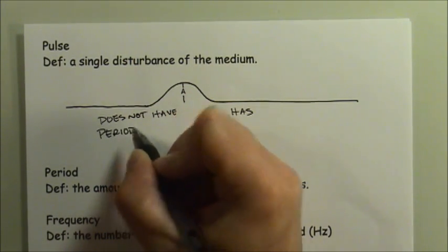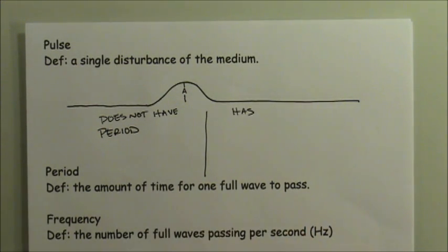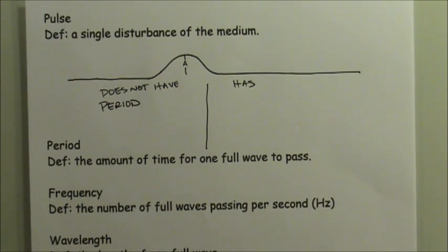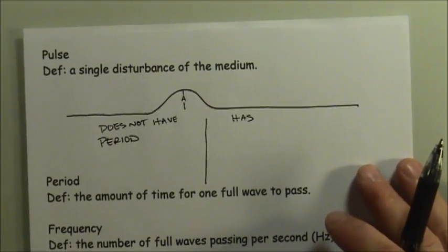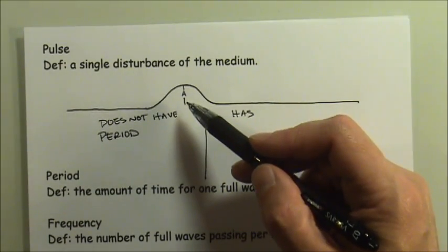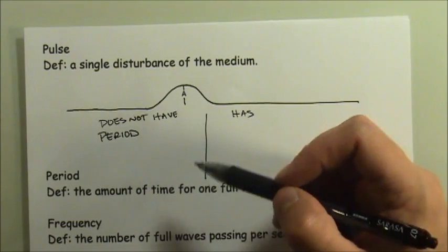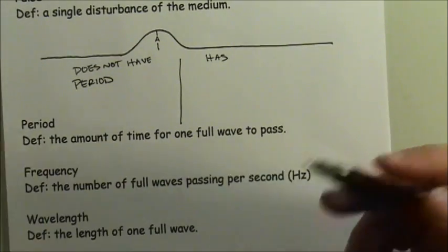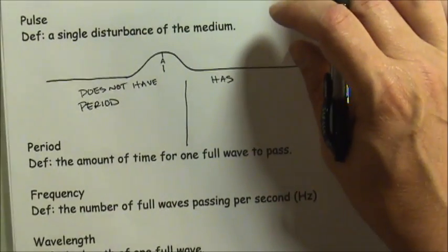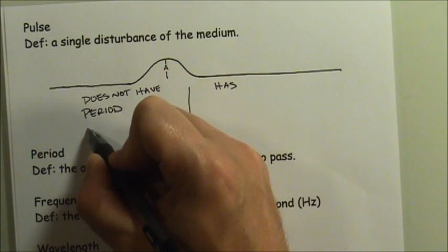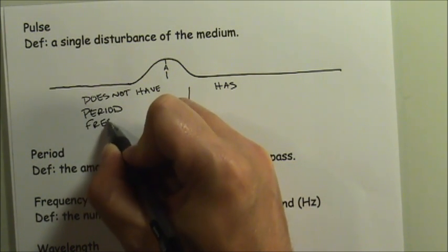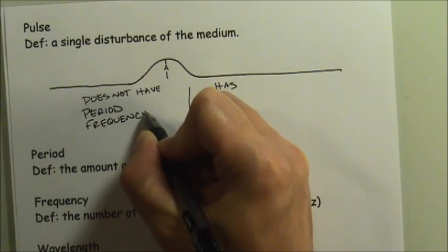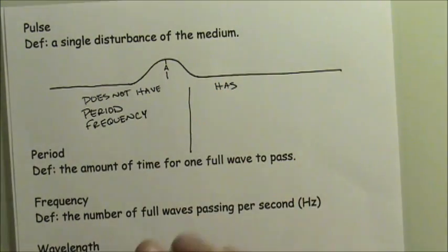A pulse does not have the property known as the period. And because it does not have a period, it also does not have frequency. The frequency is the number of full waves that pass you per second. A pulse would always be just one, and since there's no repeating, it doesn't make sense to talk about frequency. There is no period and no frequency because there is no repeating motion.